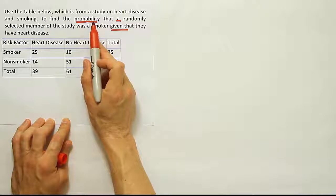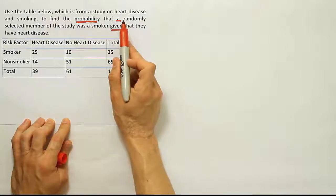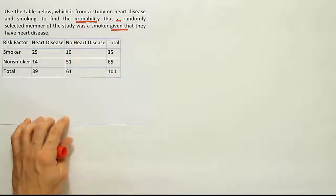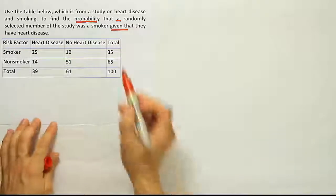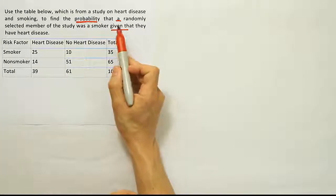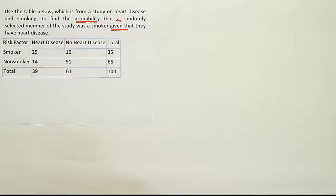The phrase find the probability tells me it's a probability problem. The fact that we're selecting just one member of the study and we have the phrase given that indicates it's conditional probability. Remember the given that phrase is a key word for conditional probability. We're just selecting one subject. It's just a basic classic conditional probability.